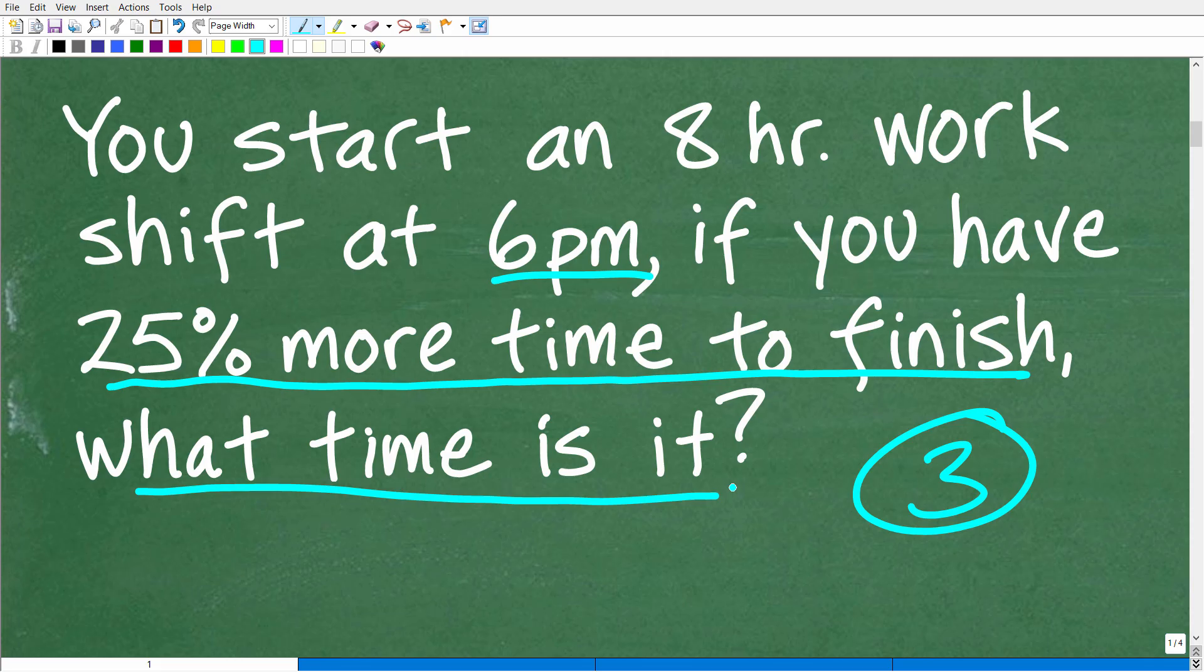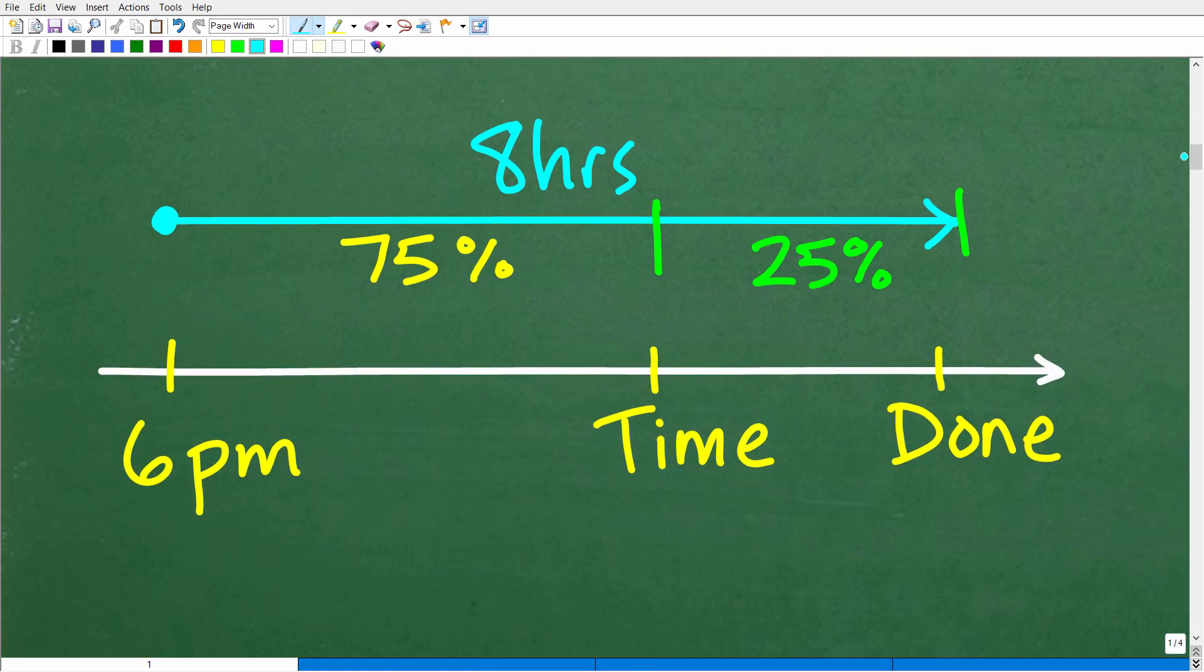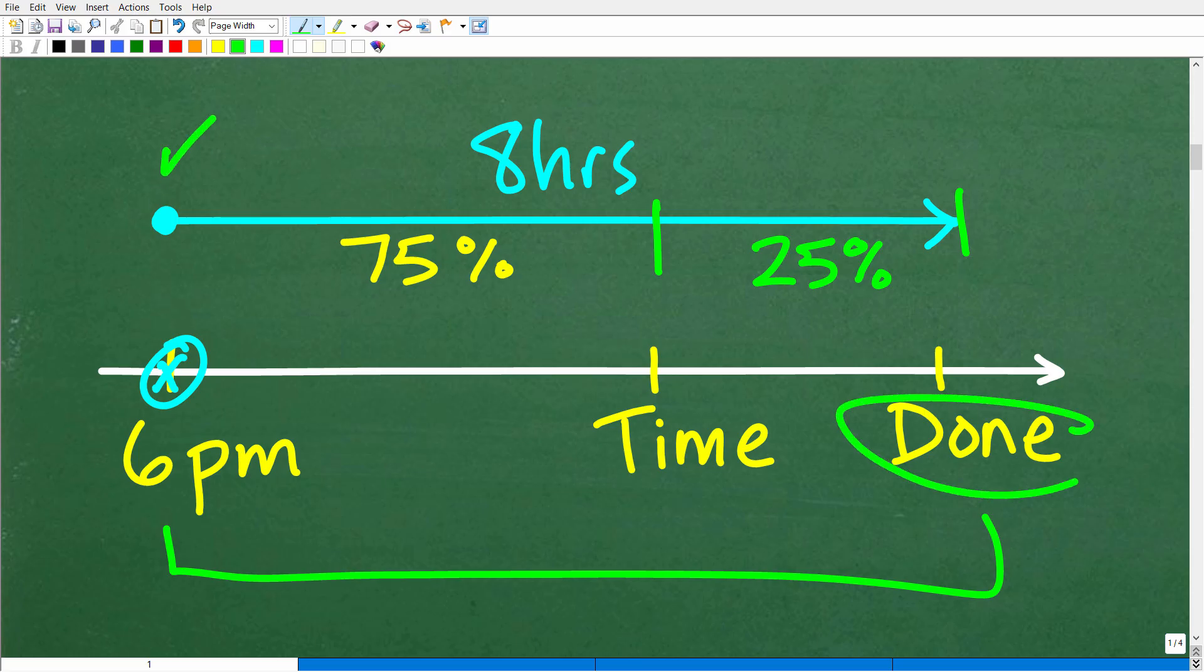But here, you have to kind of do some sort of visual model, right? You have to think about it. This is the way my brain would be thinking about it. It's 6 o'clock right now, and I have to finish this work shift out. So I have 8 hours to go until I'm completely done from 6 p.m.